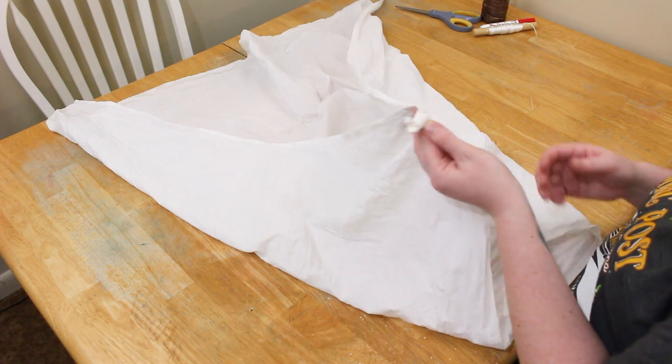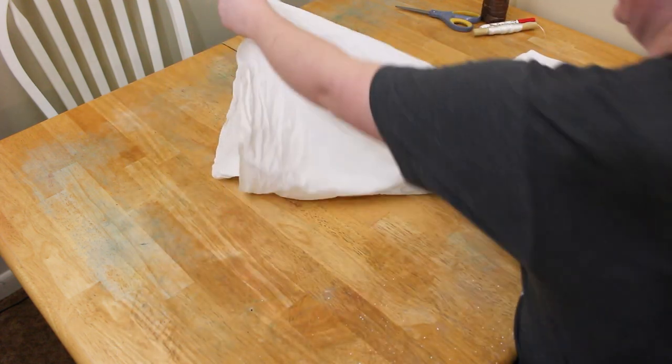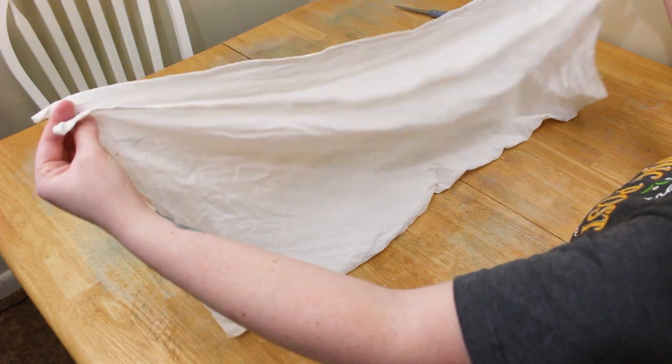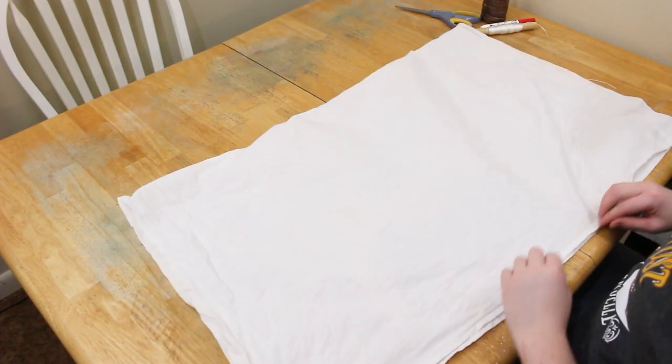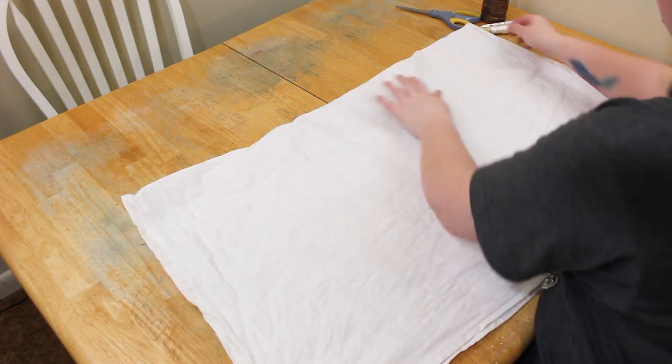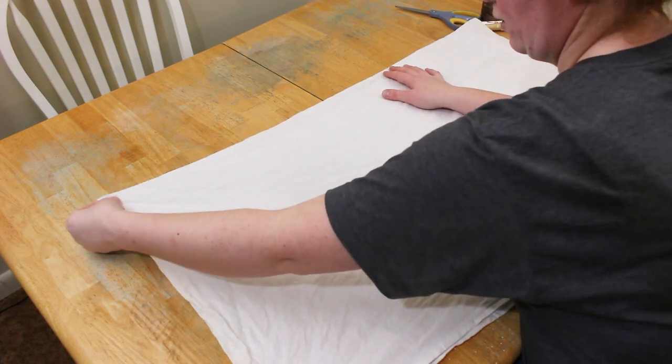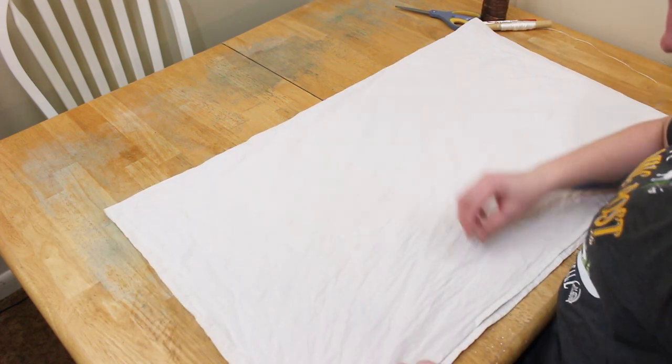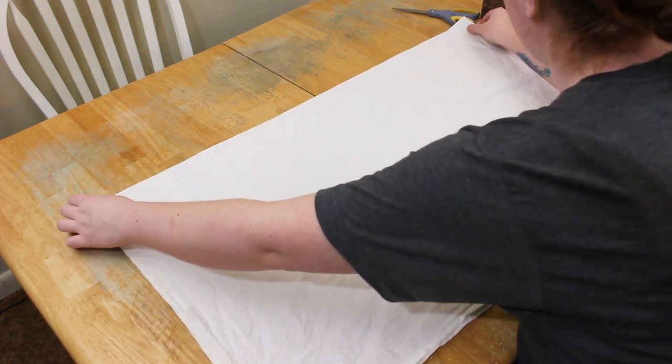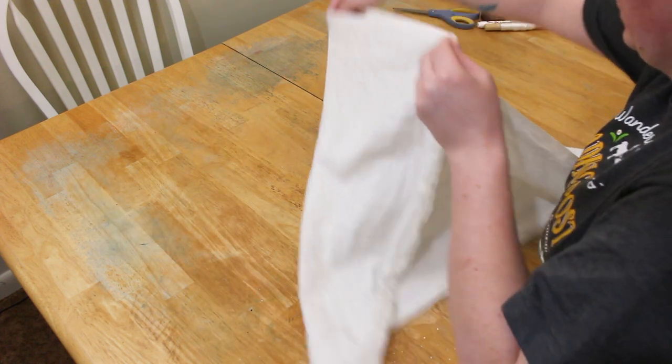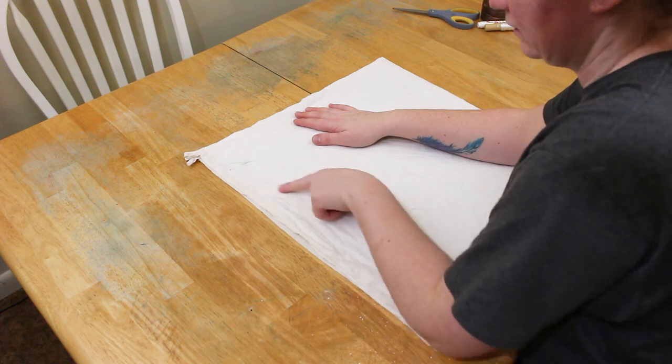And then soak it in soda ash for your fiber reactive dyes, like if you're using Procion dyes. So first we're gonna match up the corners and fold it in half. If you see any weird colors on this, I also use this table for pastel chalk, so that will wash right out. Just making sure there's no wrinkles in there and we're going to fold it in half again.